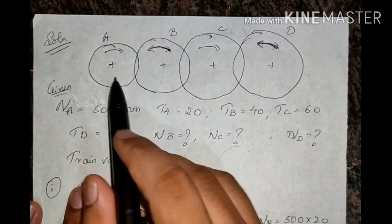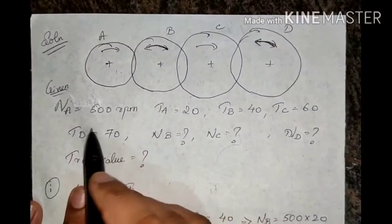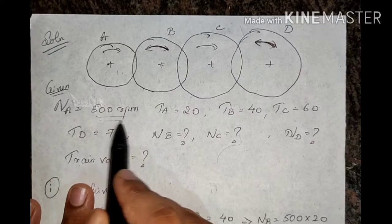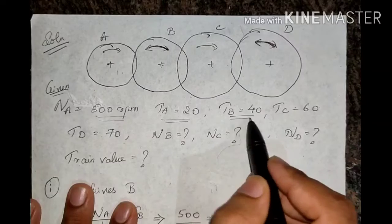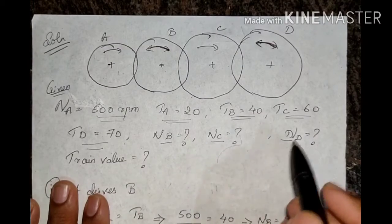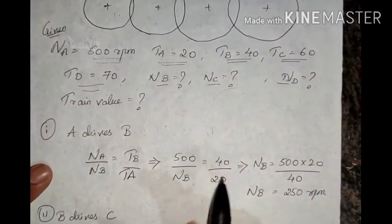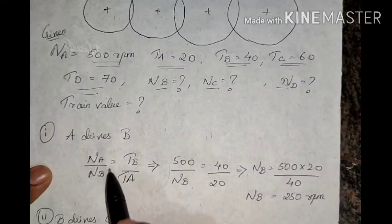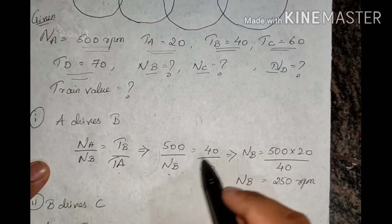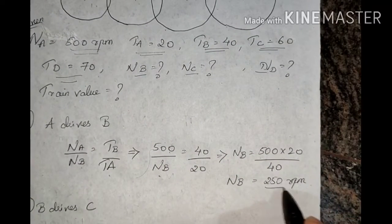Given: NA = 500 RPM, TA = 20, TB = 40, TC = 60, TD = 70. Since A drives B: NA/NB = TB/TA → 500/NB = 40/20, so NB = 500 × 20/40 = 250 RPM. Since B drives C: NB/NC = TC/TB → 250/NC = 60/40, so NC = 166.67 RPM.